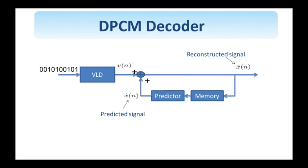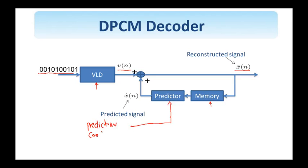Here is the DPCM decoder for completeness. We saw that the decoder is part of the encoder. The binary code words arrive at the decoder, are variable-length decoded so the code words are converted to symbols — this is the prediction error. The decoder has already reconstructed past values stored in memory, used by the predictor, which has already obtained the prediction coefficients from the encoder. The predictor performs prediction, and prediction plus correction gives the next reconstructed value of the signal.